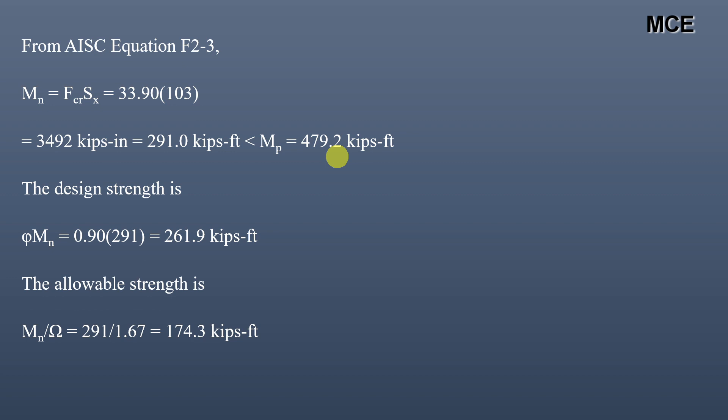This is how we find the nominal flexural strength for a steel beam according to AISC specifications for three different cases: continuous lateral support, unbraced length less than LR but greater than LP (inelastic LTB), and unbraced length greater than LR (elastic LTB). I hope you learned something new from this video. If you find it helpful, please subscribe to the channel and share with your friends. Thanks for watching and see you in the next video.